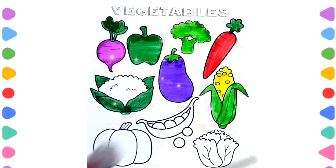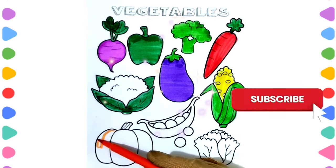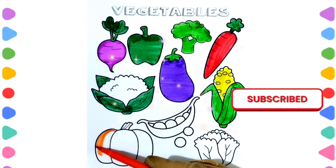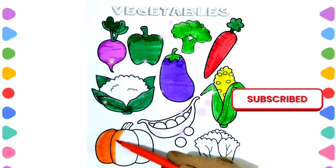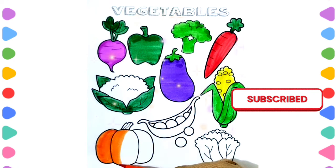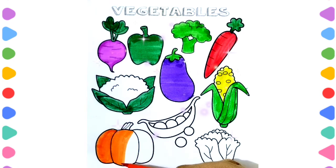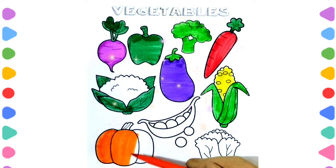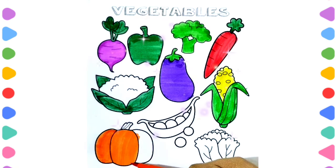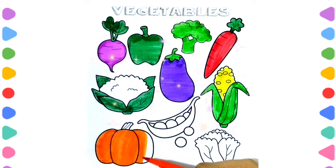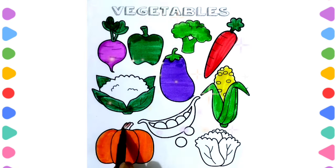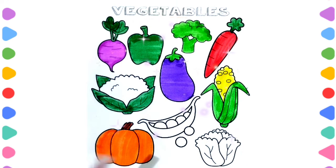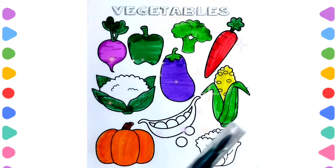Pumpkin — orange, yellow. Orange color pumpkin. Peas — green color.